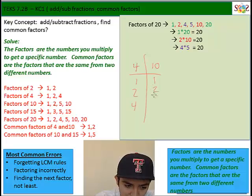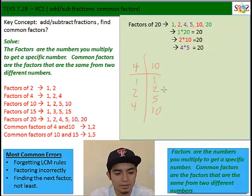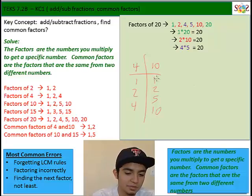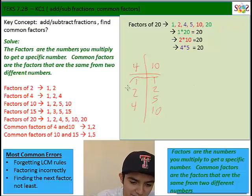And then for 10 the factors are 1, 2, 5, and 10. So now since we drew out this table we can see easily that the common factors for 4 and 10 are 1 and 2.